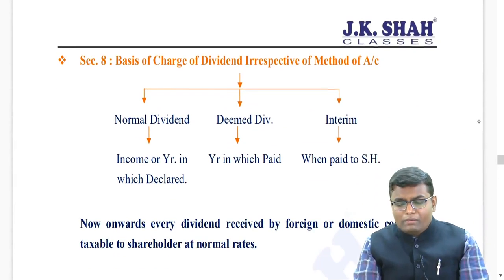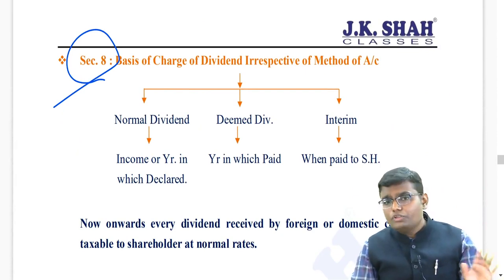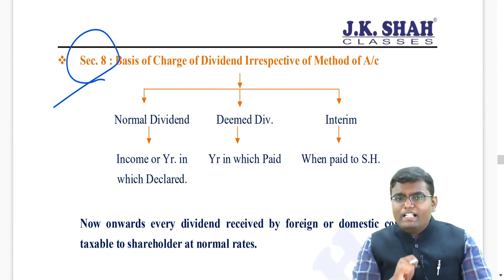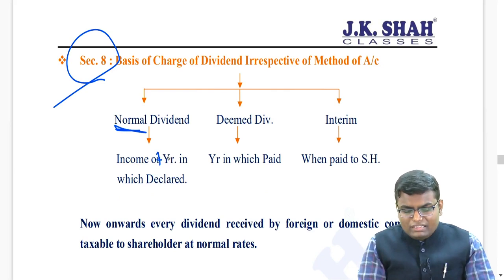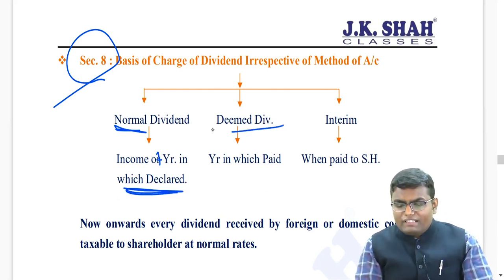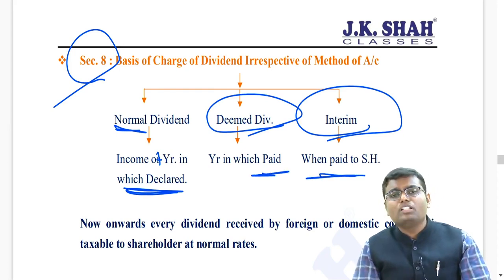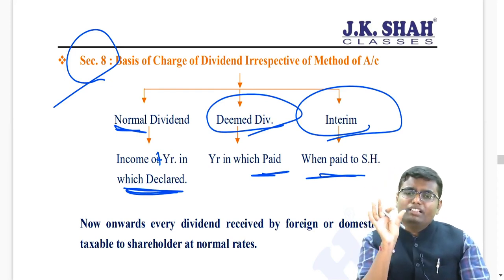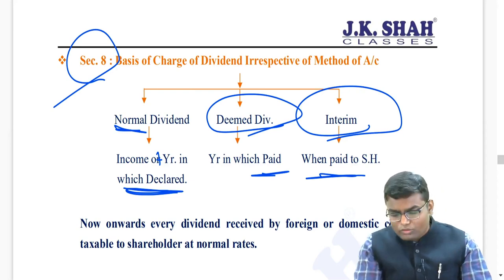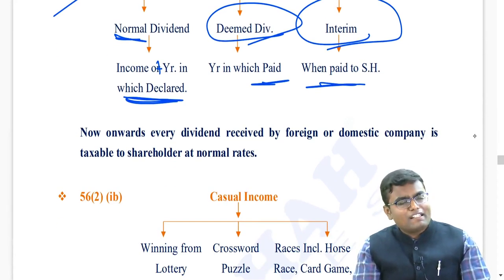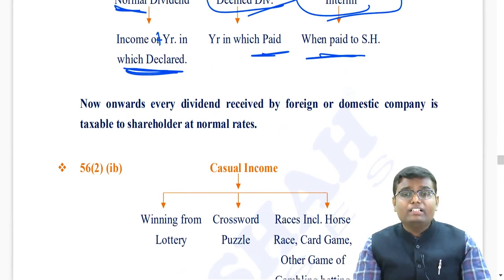Remember section 8 - notwithstanding anything contained in section 145, your books of account don't matter. If it is normal dividend, it will be taxable in the year in which it is declared. However, if it is deemed dividend or interim dividend, it is taxable in the year in which it is paid or distributed to the shareholder. So: normal dividend taxable in the year of declaration; deemed dividend and interim dividend taxable in the year of payment.